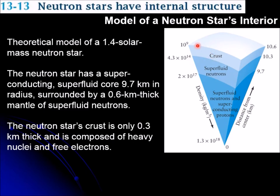They have a crust and then superfluid neutrons, and then superfluid neutrons and superconducting protons. This crust is only about one-third of a kilometer, and there is a substructure here that we're going to discuss next.